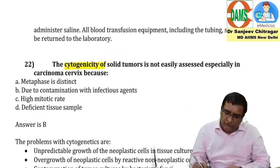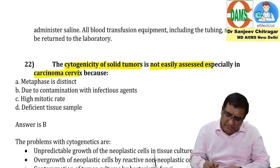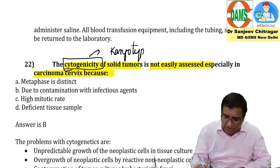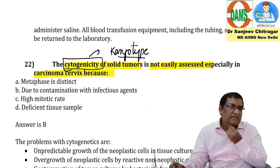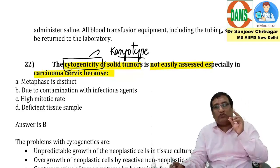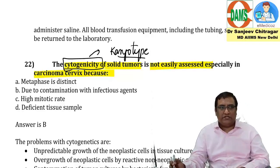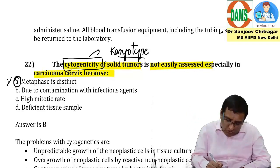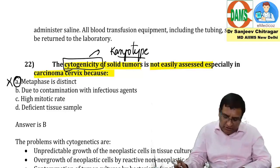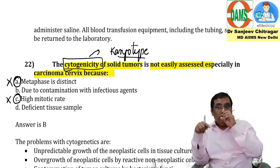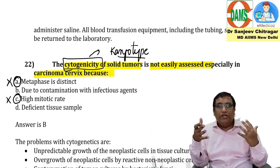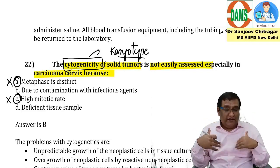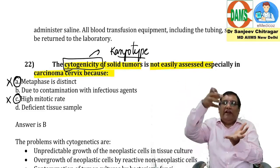Cytogenicity of solid tumors is not easily assessed, especially in carcinoma cervix. For solid tumors we prefer FISH over karyotyping. For karyotyping, metaphase is needed — colchicine is added to arrest cells in metaphase. This works well for leukemias which have high mitotic rates. A distinct metaphase with contamination, or high mitotic rate, or deficient tissue sample — these are analyzed as reasons karyotyping is difficult for solid tumors.